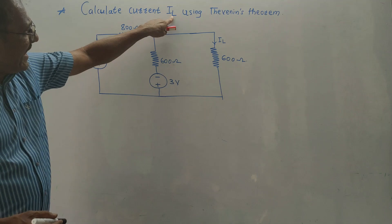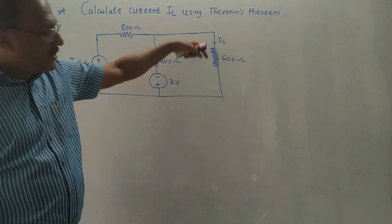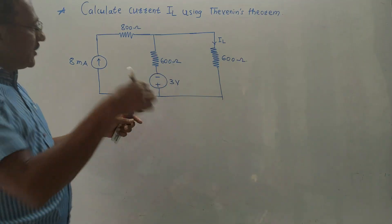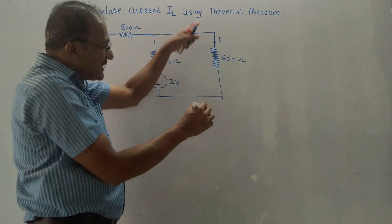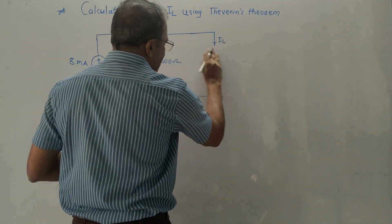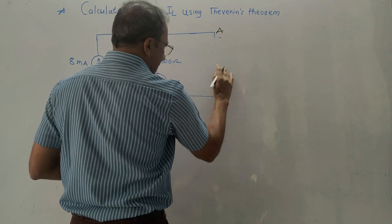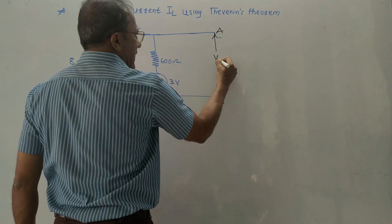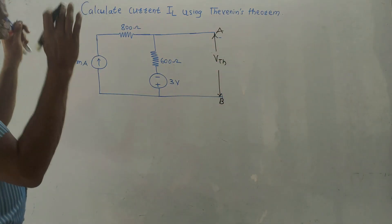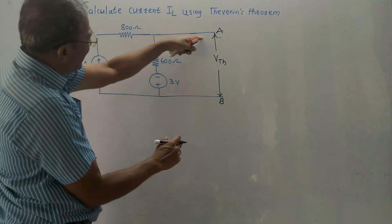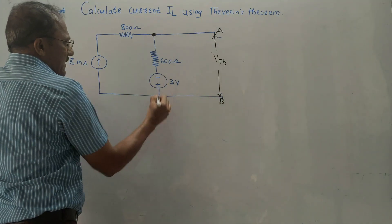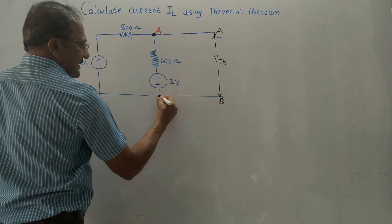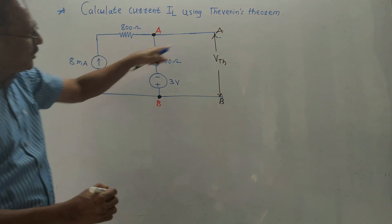The next numerical: calculate current IL using Thevenin's theorem. The current IL is flowing through the 6 ohm resistance, so 6 ohm is called the load resistance. First step: open circuit the branch through which IL is flowing — simply remove this 6 ohm and mark these points as A and B. Whatever voltage appears across points A and B is Thevenin's equivalent voltage VTH. Since there is a simple wire with no resistance, VTH is the same as the voltage between these two points A and B.